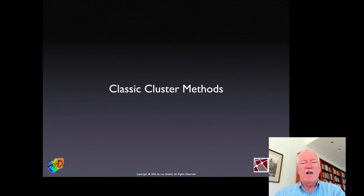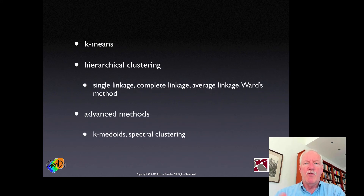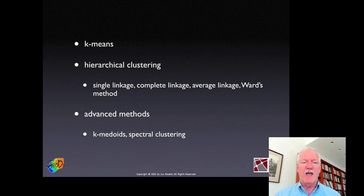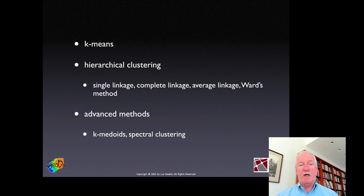Then we cover classic cluster methods, which are essentially non-spatial but we need to know about them before moving to the spatial ones. I start with k-means, then we go to hierarchical clustering, looking at four different linkage methods: single linkage, complete linkage, average linkage, and Ward's method. And then we consider advanced methods: k-medoids and spectral clustering. That's the basis of unsupervised learning in machine learning.